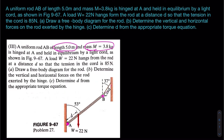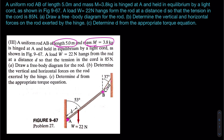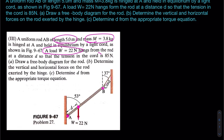Another weight or load of 22 newtons hangs from the rod at the distance d, as you see here. This is a weight or a load. For part A, the tension in the cord is given as 85 newtons.